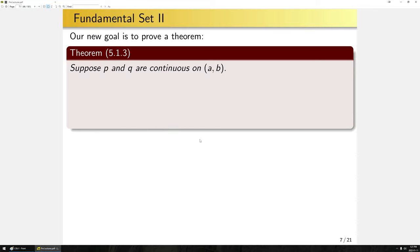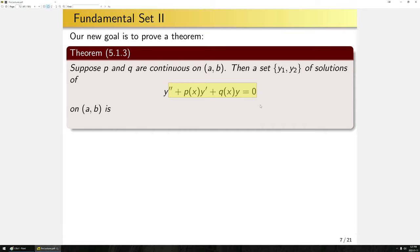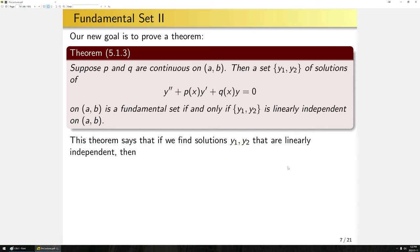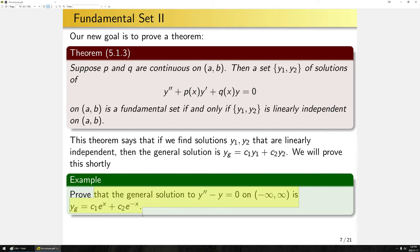Our new goal is to prove Theorem 5.1.3: suppose p and q are continuous on (a,b); then a set of solutions {y₁, y₂} on (a,b) is a fundamental set if and only if it is linearly independent on (a,b). This theorem lets us say: if I find two solutions and can show they are linearly independent, then I have my general solution — done.